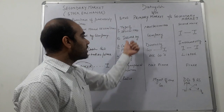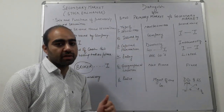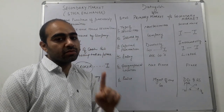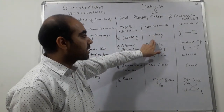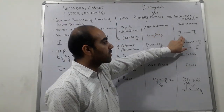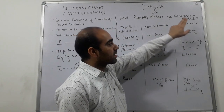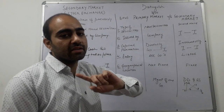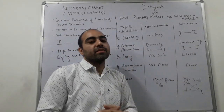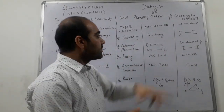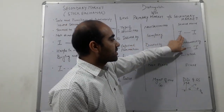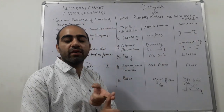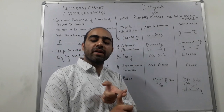The second point is: issued by whom. In the primary market, the company first time issues the securities — so it is issued by the company. But in the secondary market, one investor transfers securities to another investor. There is a transfer of securities between investors, meaning it is not the role of the company but the role of the investors.